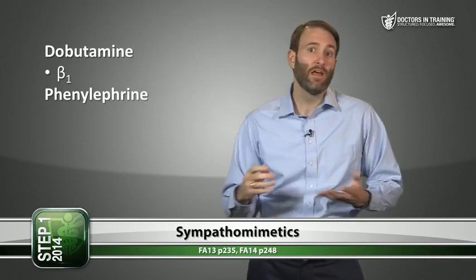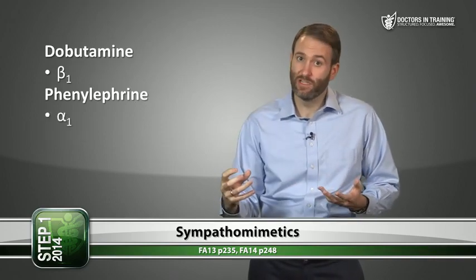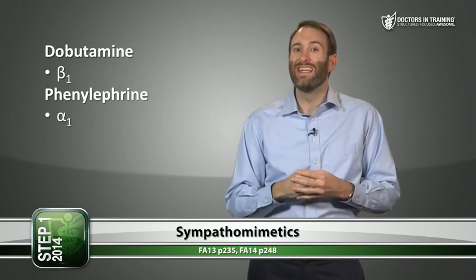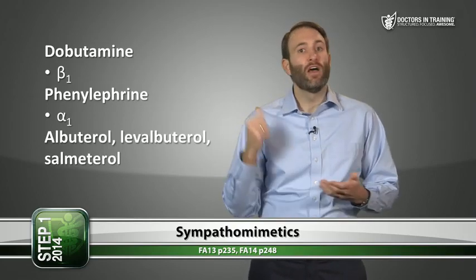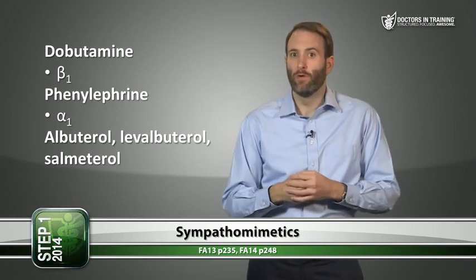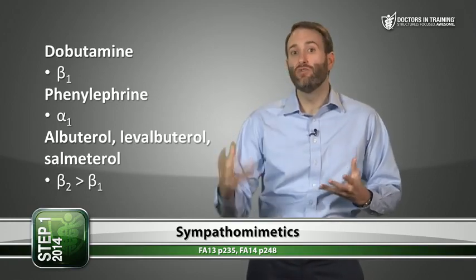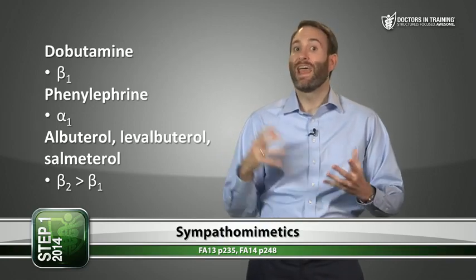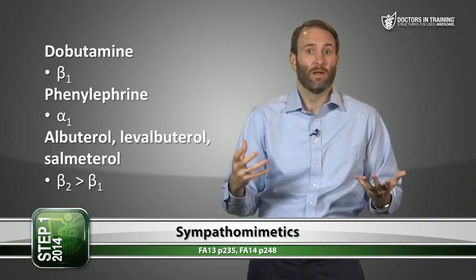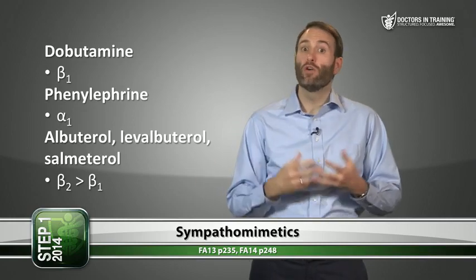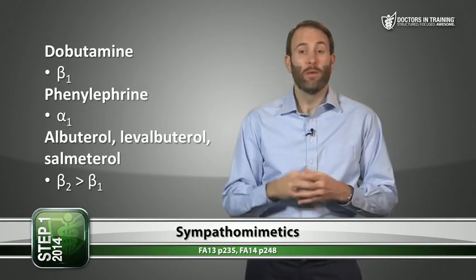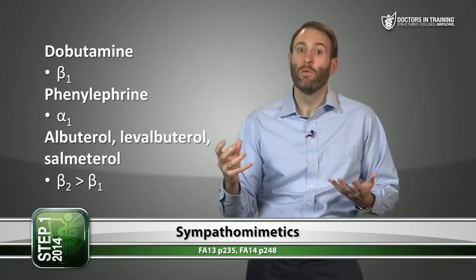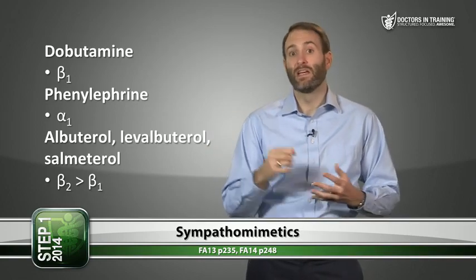Phenylephrine causes strong alpha-1 stimulation and is used for pupillary dilation and very commonly as a nasal decongestant. Albuterol, levalbuterol, and salmeterol have strong beta-2 stimulation with a little beta-1; used mostly as inhaled drugs for asthma. Their beta-2 stimulation causes bronchodilation. Because of beta-1 activity, patients often get tachycardia when using inhalers, though this is less pronounced with levalbuterol.